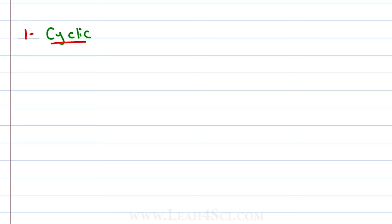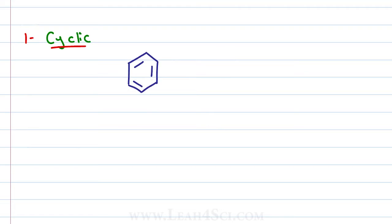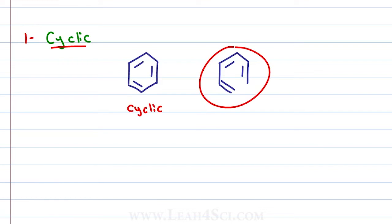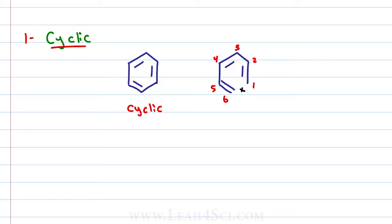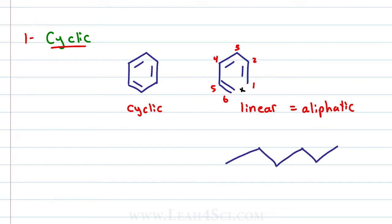For a molecule to be cyclic, it has to be a cycle or a ring. This means if you have a carbon chain, the first carbon has to be connected to the last carbon. For example benzene — we have 6 carbons where carbon 1 is attached to 2, 3, 4, 5, 6, and 6 is attached to 1. Compare that to a linear or aliphatic molecule, which is actually 1,3,5-hexatriene pretending to be benzene. This is what it looks like if we stretch it out.